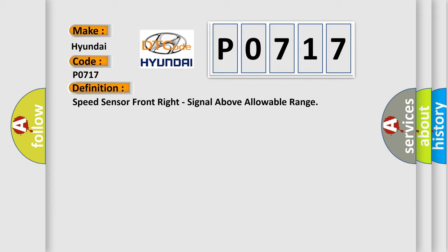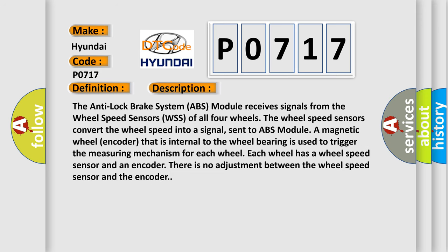Here is a short description of this DTC code. The anti-lock brake system ABS module receives signals from the wheel speed sensors WSS of all four wheels. The wheel speed sensors convert the wheel speed into a signal sent to the ABS module. A magnetic wheel encoder that is internal to the wheel bearing is used to trigger the measuring mechanism for each wheel. Each wheel has a wheel speed sensor and an encoder. There is no adjustment between the wheel speed sensor and the encoder. This diagnostic error occurs most often in the following cases.